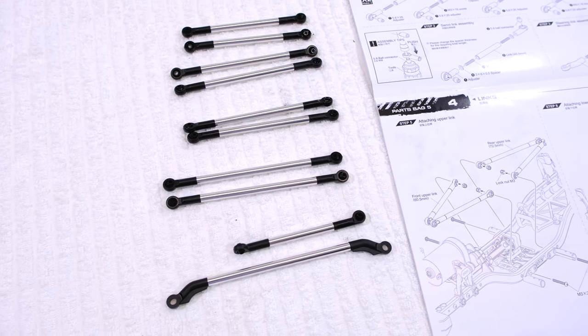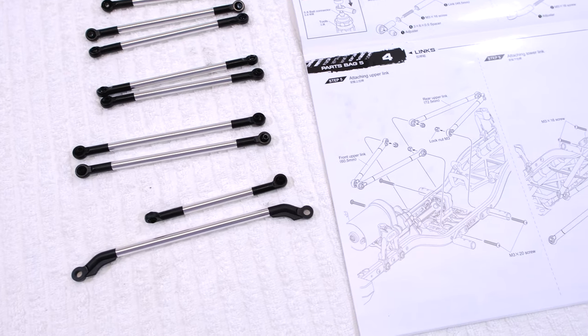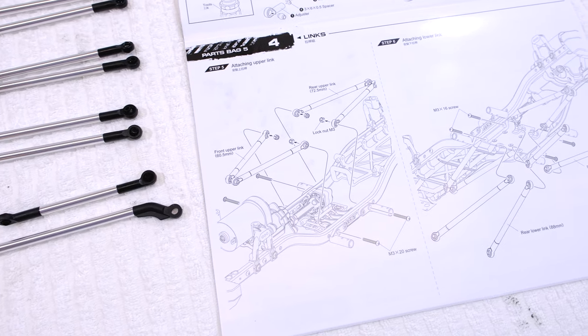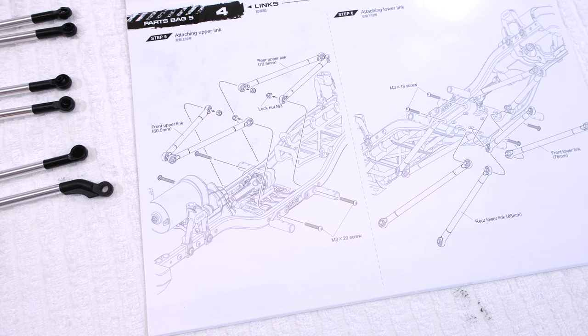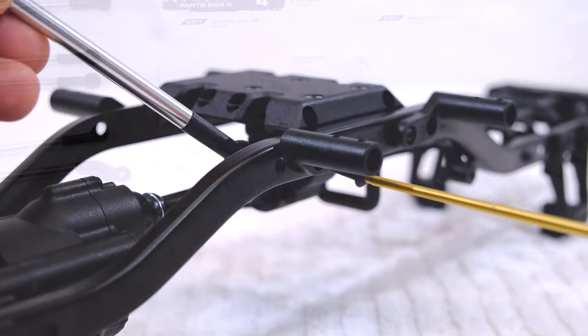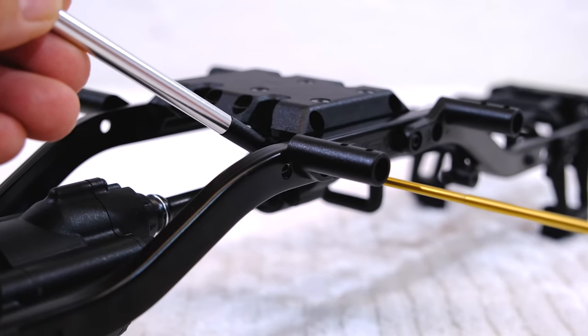As you can see I have already finished all the links on the same way. And the next step is the installation of the upper links on the chassis. These are fastened with a screw and a nut.